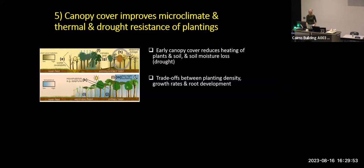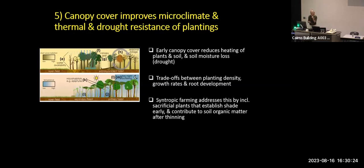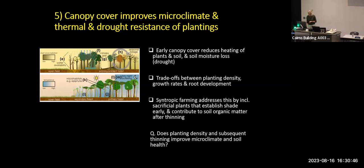Early canopy cover is going to be really crucial, but we have trade-offs. We have the trade-off of planting density - we want to plant as densely as possible to get as much plant cover as possible to reduce temperature and drought. But we also want rapid initial growth rates without too rapid long-term growth rates, because that would affect root investment. I'm really curious about syntropic farming, particularly its use of sacrificial plants that establish shade really early, then after being sacrificed contribute organic matter to the soils. The question is: does planting density and subsequent thinning improve microclimate and soil health in restoration?